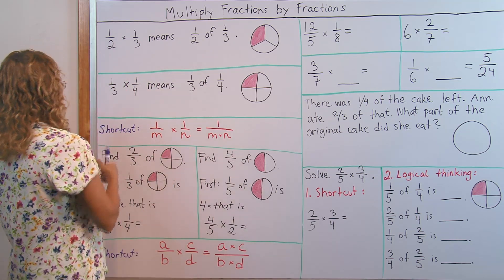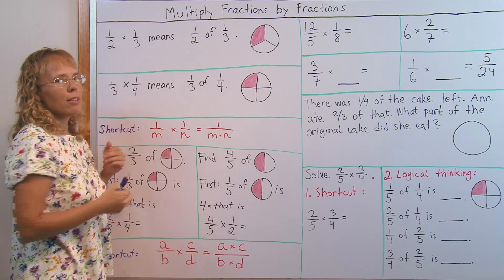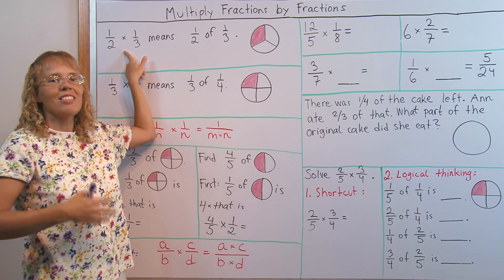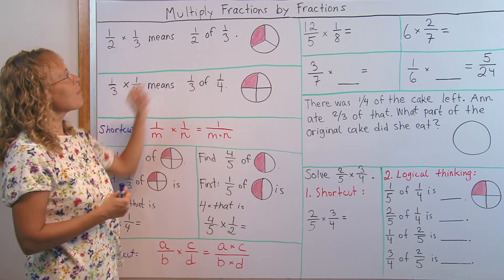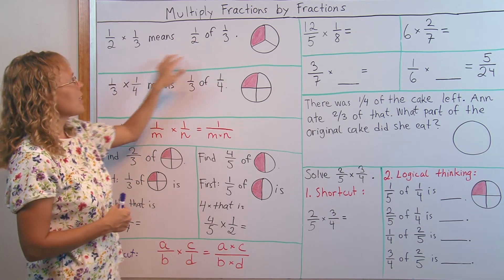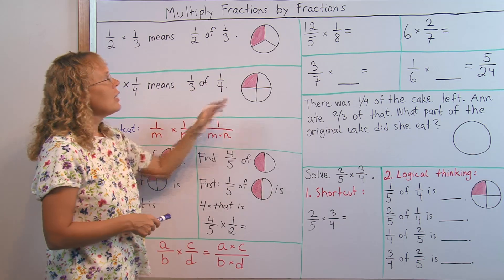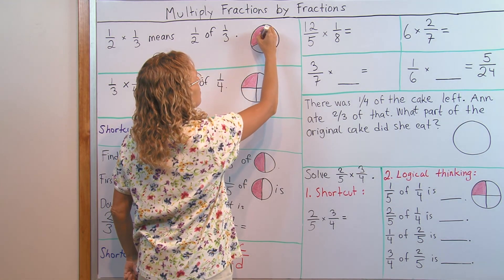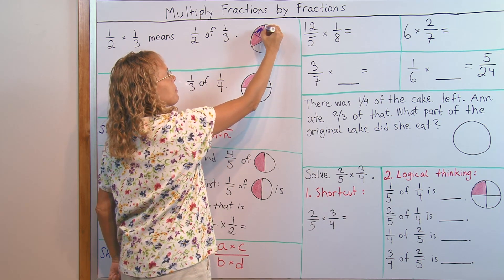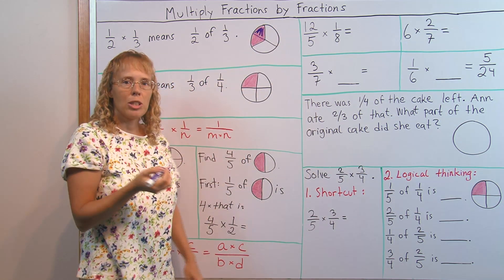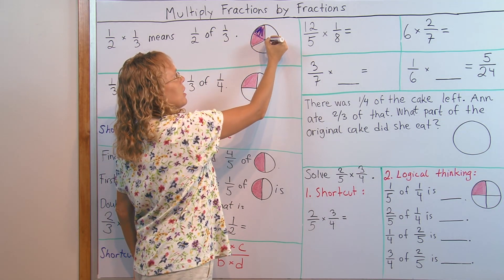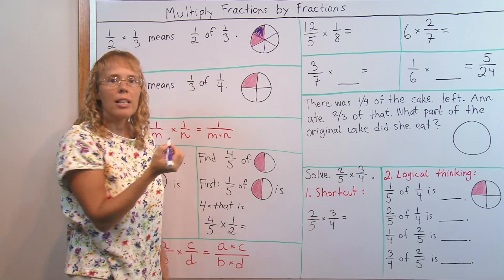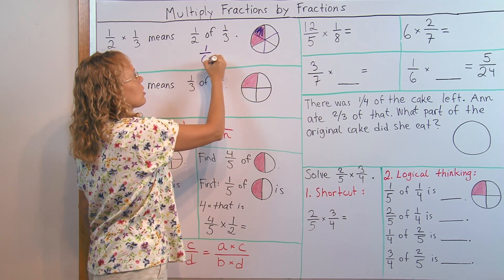Let's start with half times one third. Remember that this multiplication sign here translates into 'of'. So we think of this as half of one third, and here I have a picture of one third of a pie and I take half of it. To find out how much that is of the whole pie, let me divide these other parts into two new parts too. And now we can see clearly that this is one sixth of the original pie.